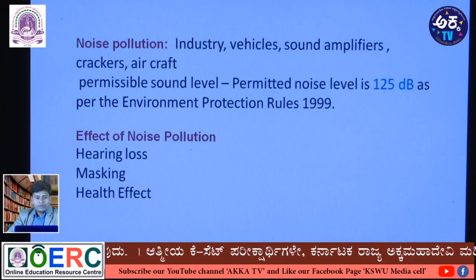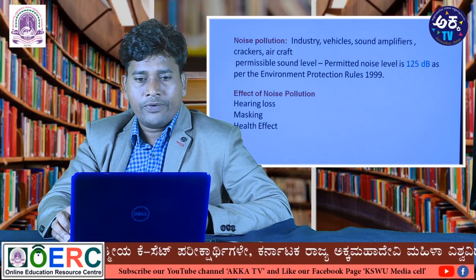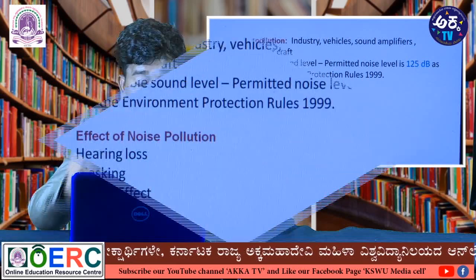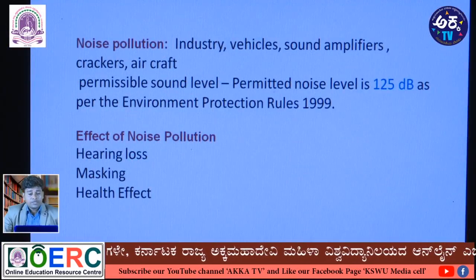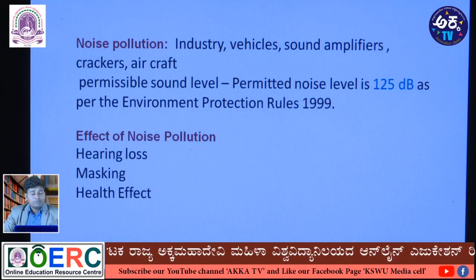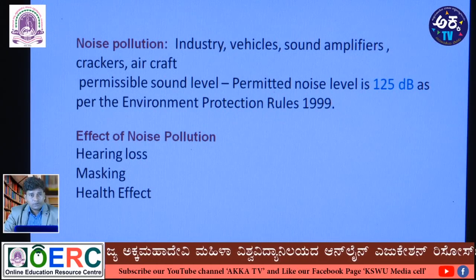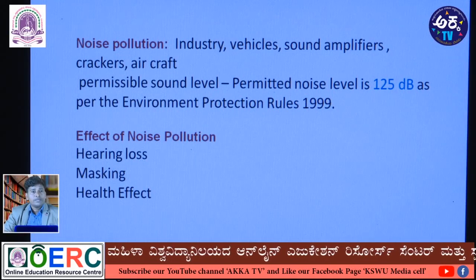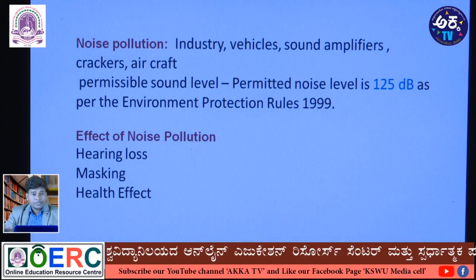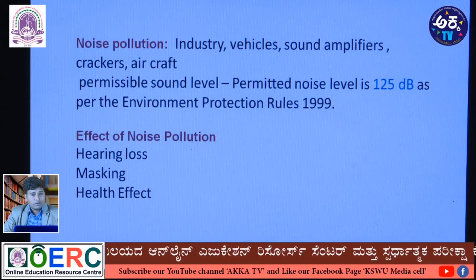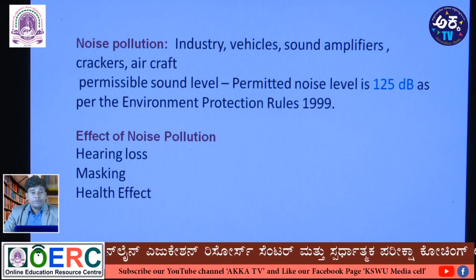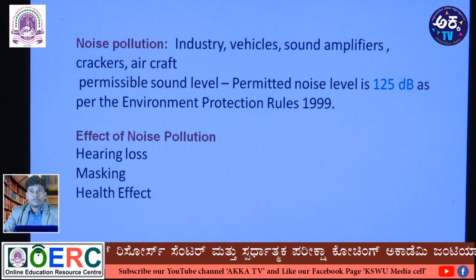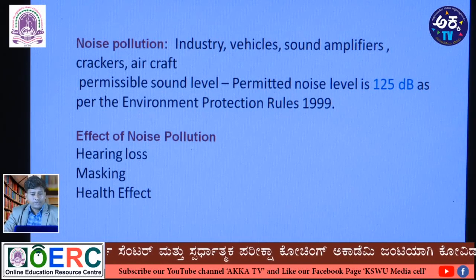Industrial pollution involves various industries releasing pollutants that create environmental problems. Examples include arsenic, lead, and cyanide causing numbness and coma; hardness and putrefaction of water changes water taste. Radioactive pollutants cause cancer, DNA damage, immune system effects, gene mutation, and genetic disorders.